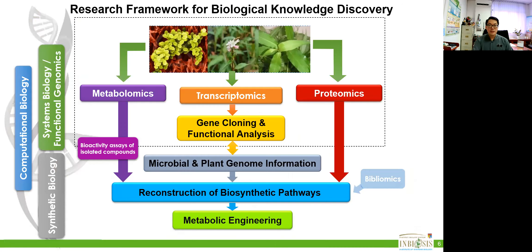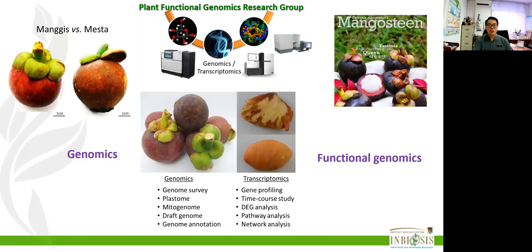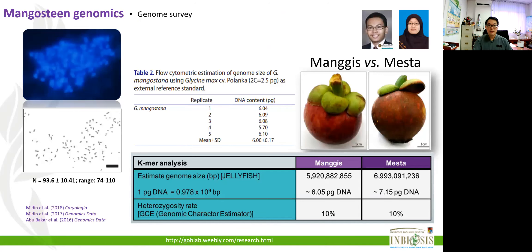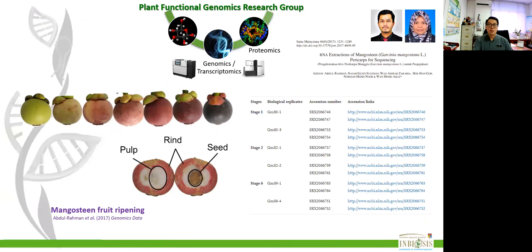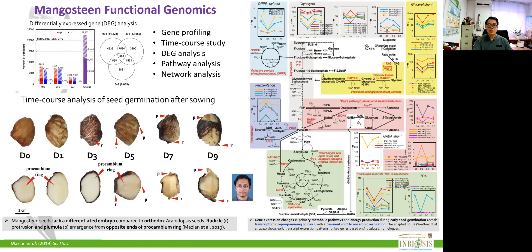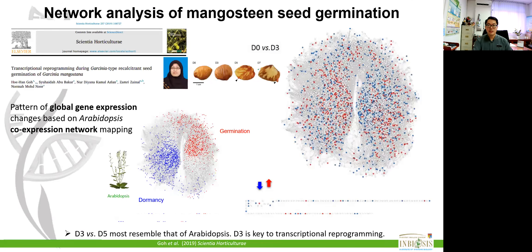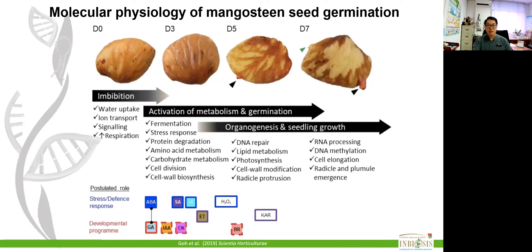Our group has studied extensively on the queen of fruit, mangosteen. We sequenced the genome of two local varieties of mangosteen and obtained their organelle genome. We try to make sense of what genes are being turned on or turned off during mangosteen fruit ripening and seed generation by sequencing all the expressed genes in different stages of development. This genomic and transcriptomic study helps us identify what genetic factors play important roles during seed generation and fruit ripening.